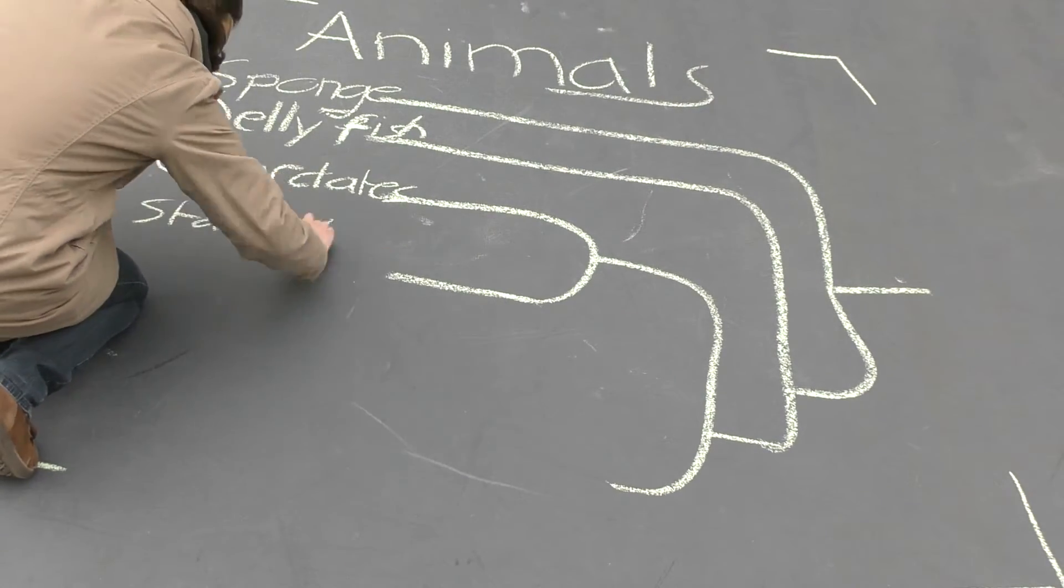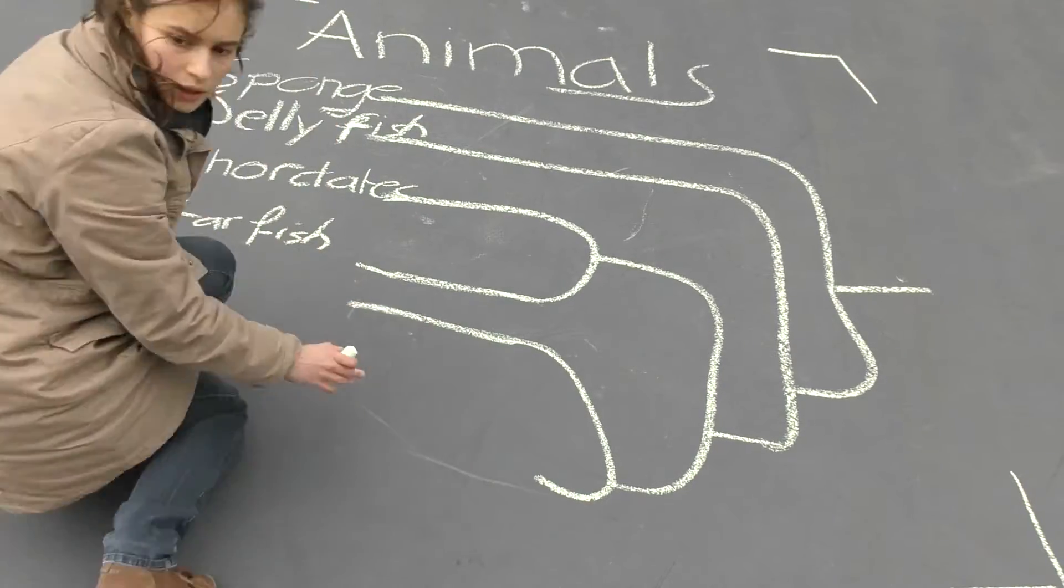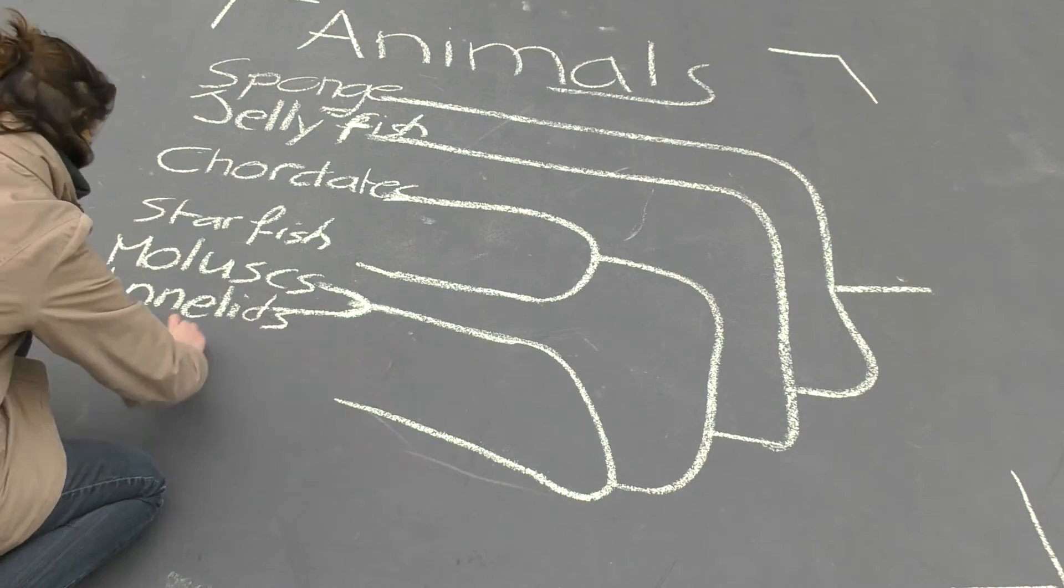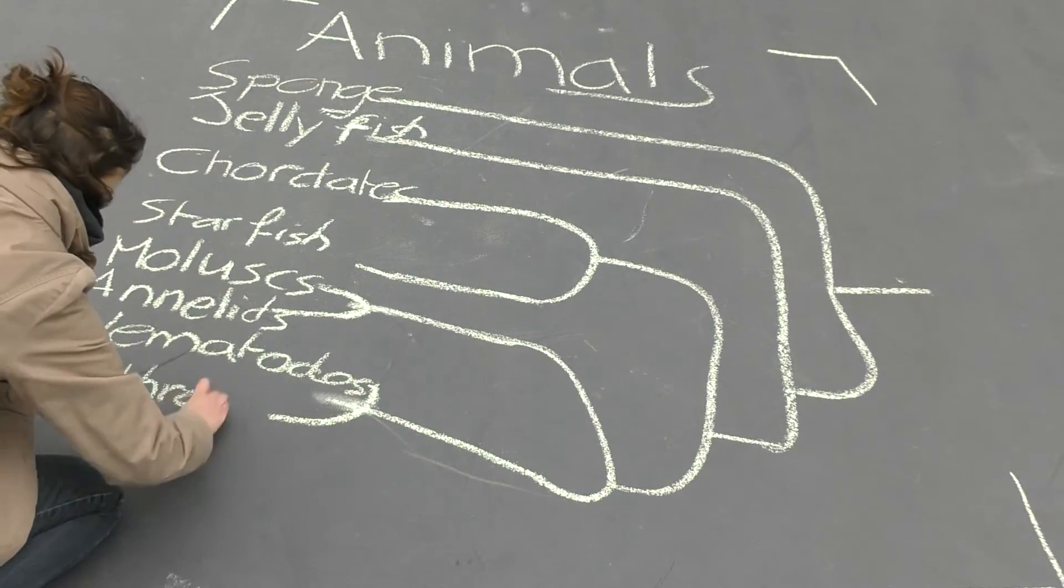Firstly, the deuterostomes with chordates such as us and sea stars. Secondly, we have the protostomes containing the molluscs, annelids such as earthworms, microscopic worms called nematodes, and the arthropods.